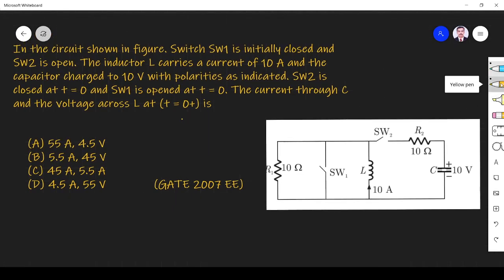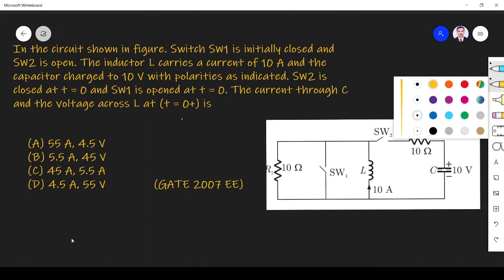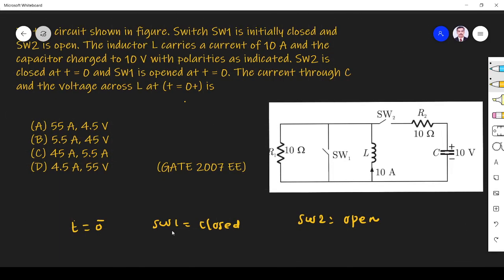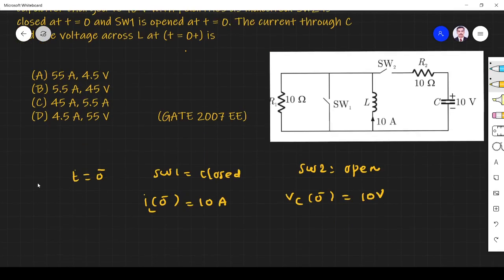So what they are given: the switch is initially closed, that means before T equals 0 or at T equals 0 minus, switch S1 is closed and switch S2 is open. The inductor L carries a current of 10A, so I_L(0-) is 10A. Similarly, the capacitor C is charged to 10V, so voltage across capacitor V_C(0-) is 10V. This is what happened initially.